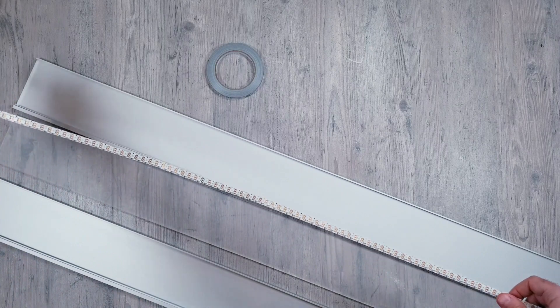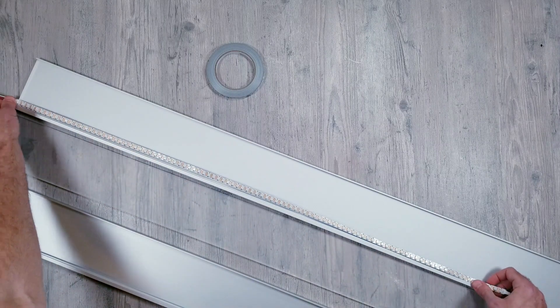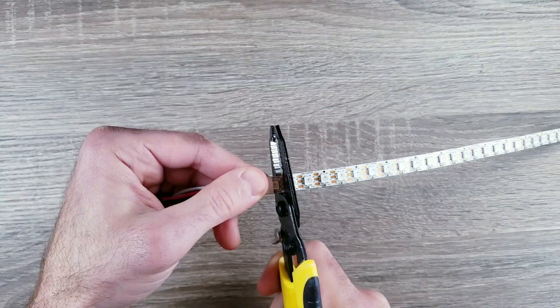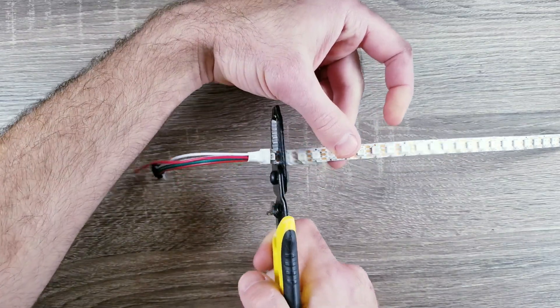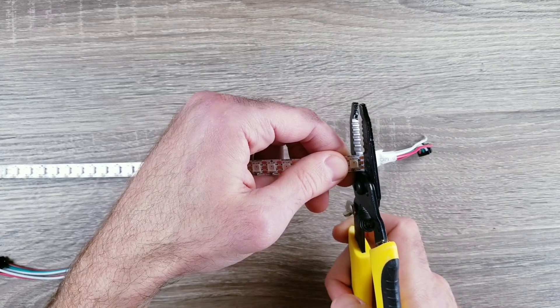Since the panels are longer than the one meter length that the LED strips come in, I'm going to solder some together so everything matches. I like using my own 18 gauge silicon wires, so I'm cutting off the first and last LED to get rid of the ones they come with.